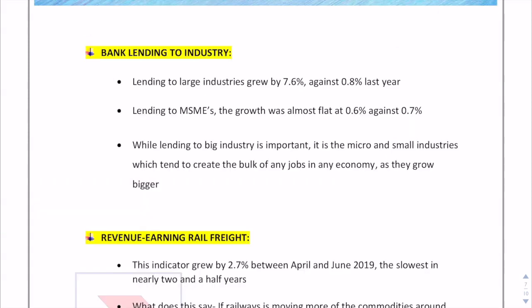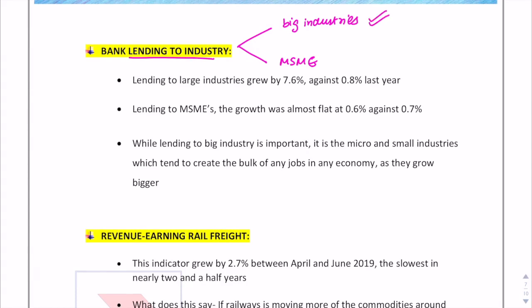The next topic under investment is bank lending to industry. Banks continue to lend primarily to big industries while ignoring micro and small industries — the MSME sector — which are primarily responsible for creating employment opportunities in an economy. As the figures show, growth in MSME sector lending has been almost flat whereas it grew in the case of large industries.